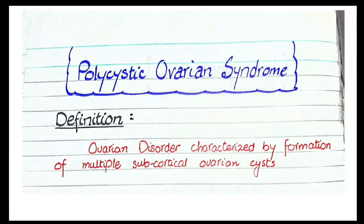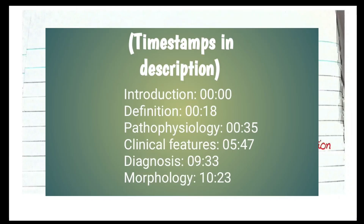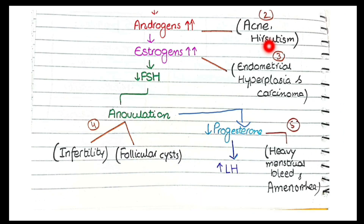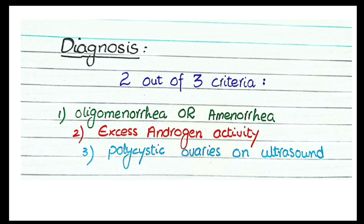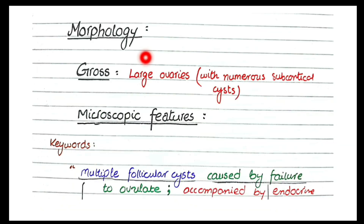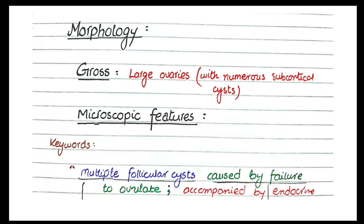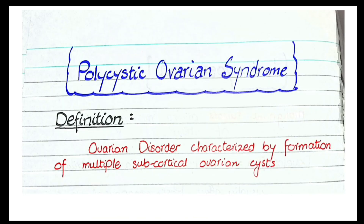In this video we will discuss the pathology of polycystic ovarian syndrome. First we will see the definition and understand its pathophysiology, then we will see the clinical features, after that we will learn about the diagnosis, and at the end we will learn the morphology of polycystic ovarian syndrome.